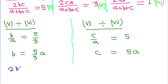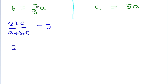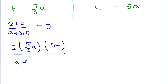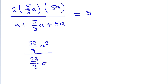Equation 5 is 2bc by a plus b plus c equals 5. Substituting b equals 5 by 3 times a and c equals 5a, we get 2 times (5a/3) times (5a) in the numerator, giving 50a squared over 3, divided by a plus 5a divided by 3 times a plus 5a, which simplifies to 50 over 3 times a squared divided by 23 by 3 times a, equal to 5.